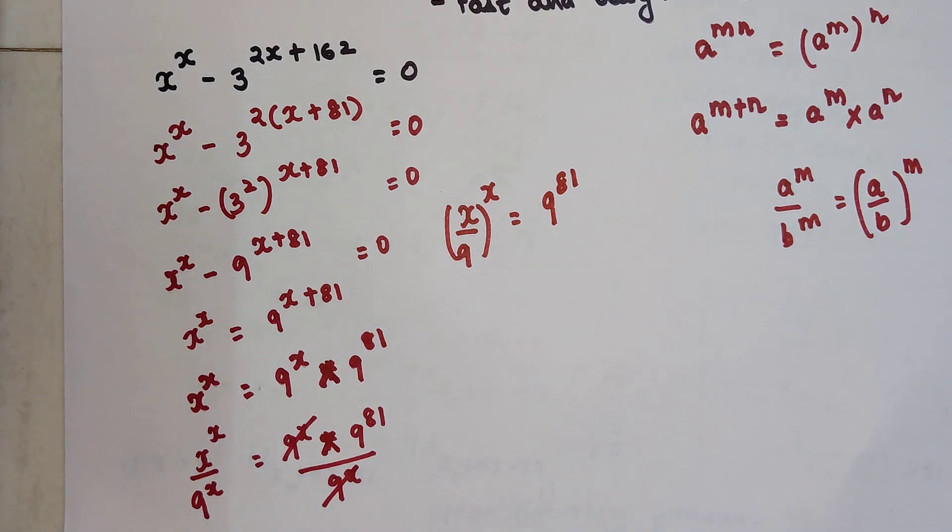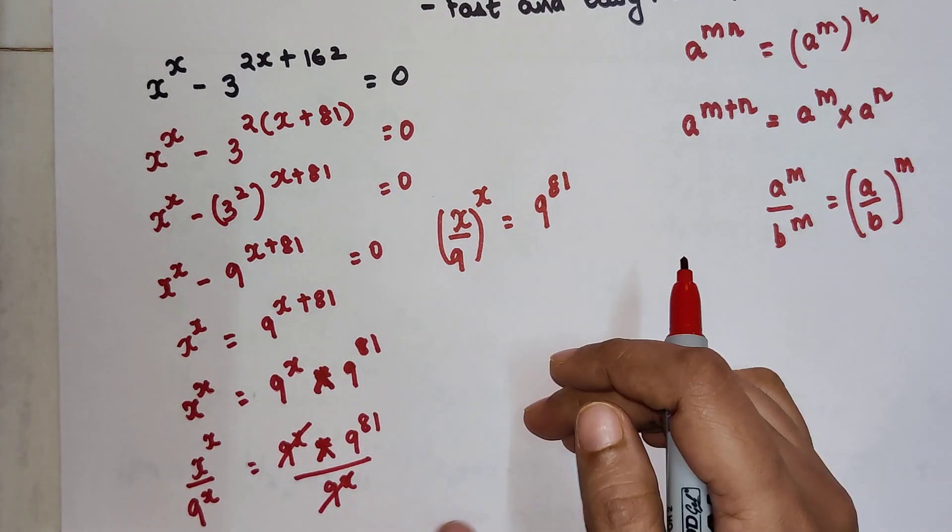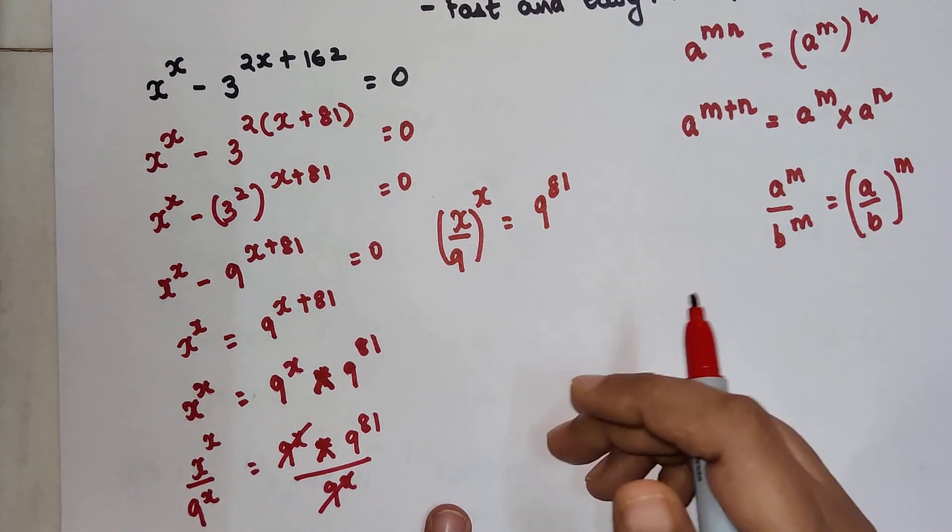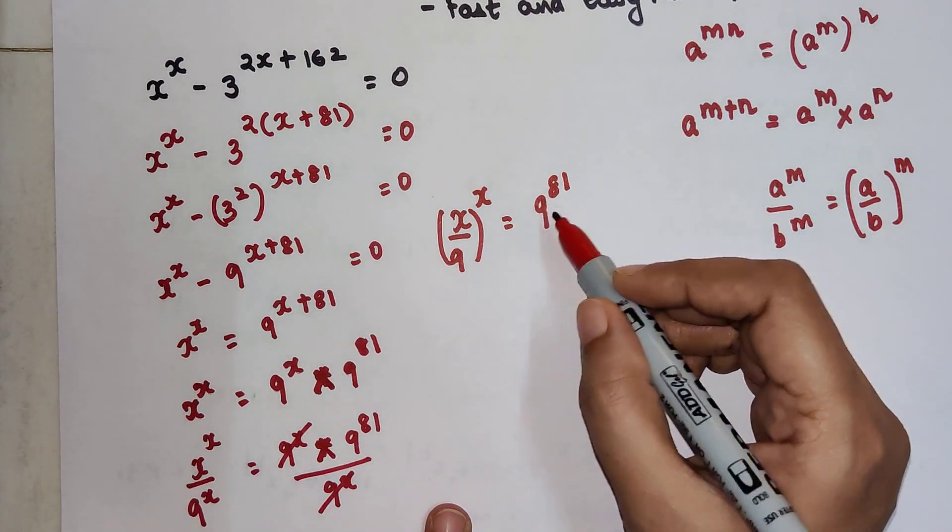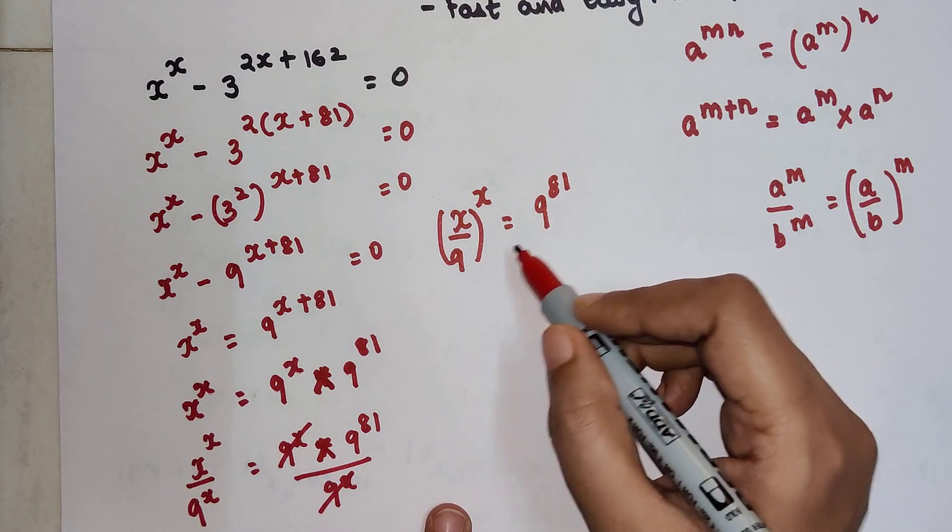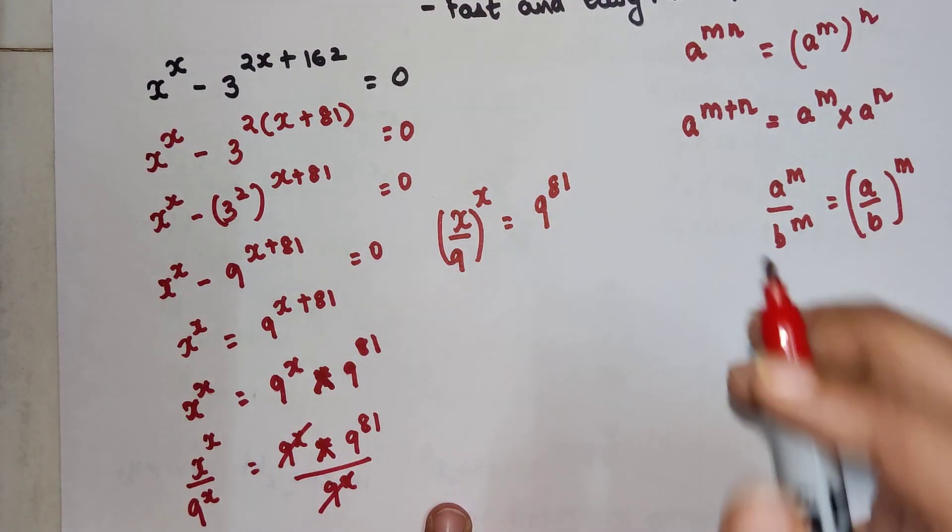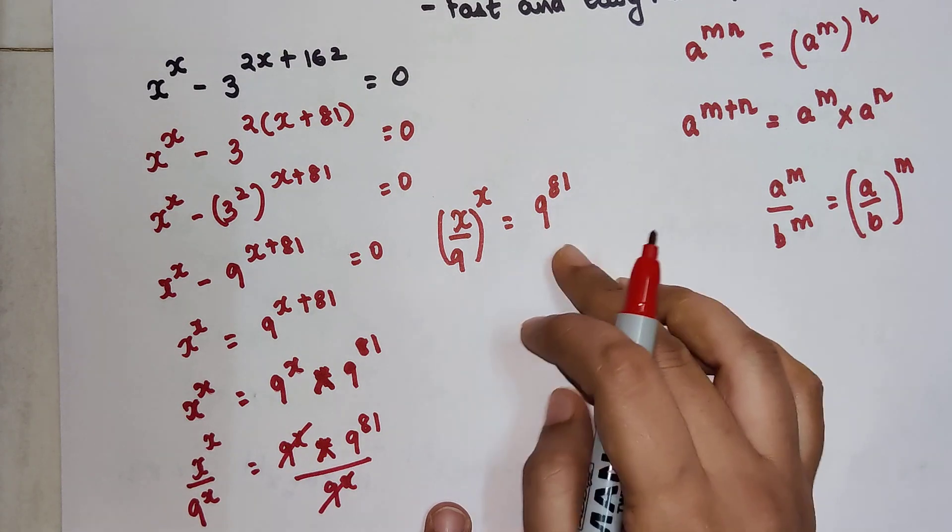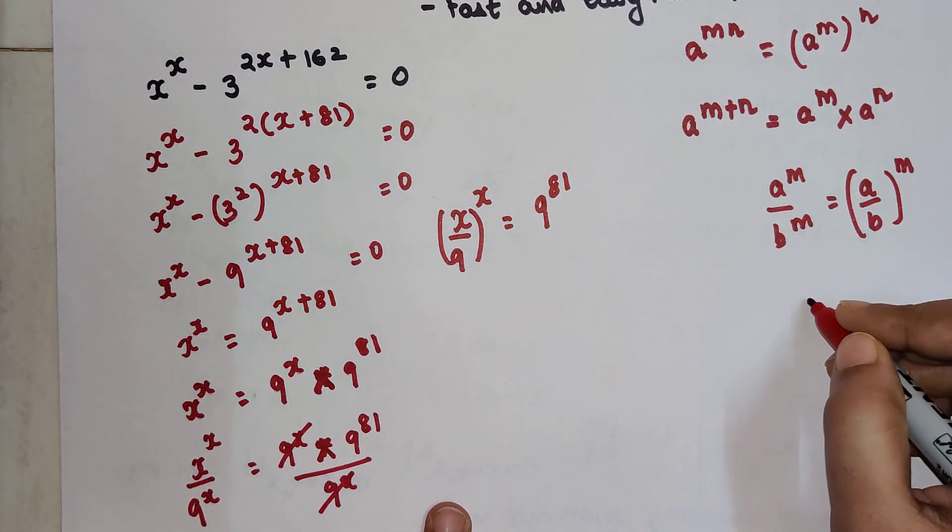So now again we are stuck. I don't know how to do this further, but what I can do is write this in terms of dividing by 9. So if I want the numerator to be 9 and my denominator also to be 9, I can write 81 upon 9, which equals 9.